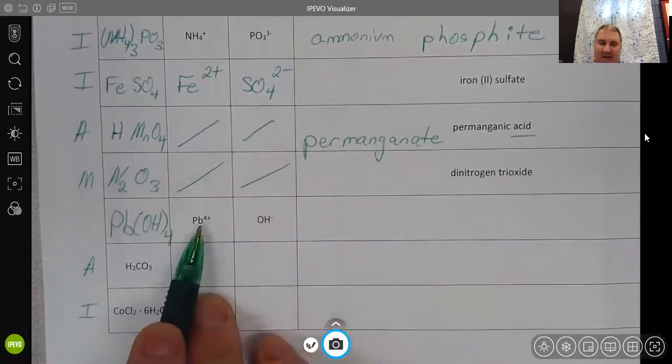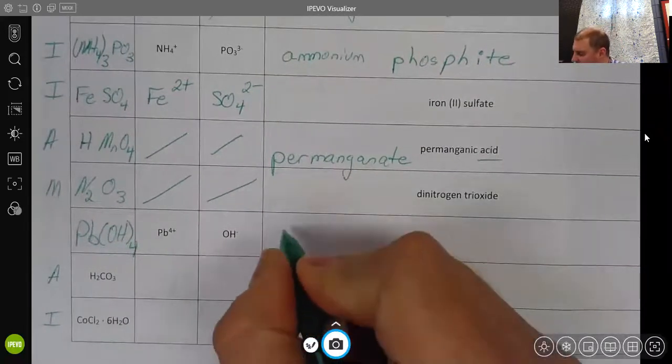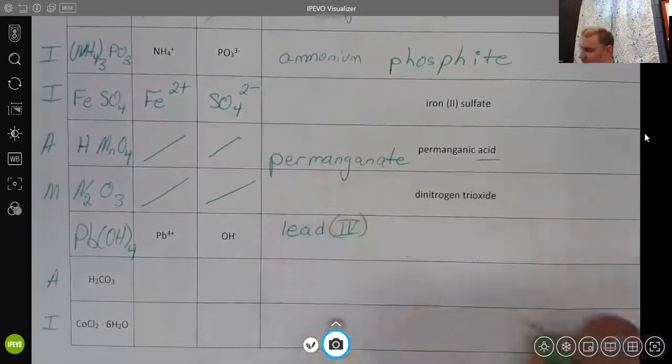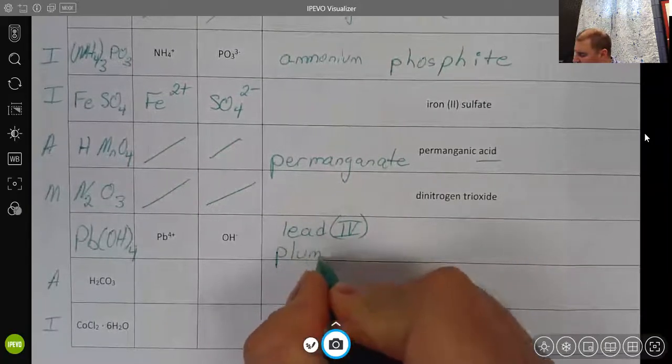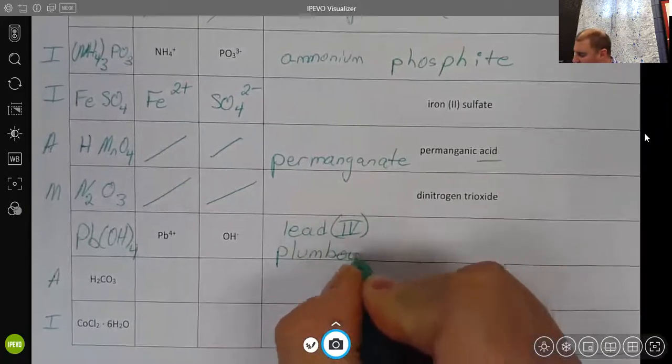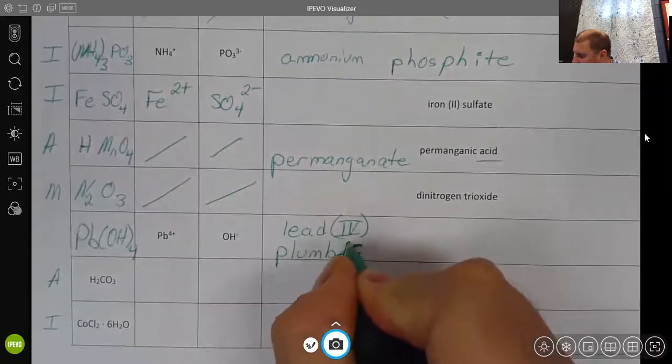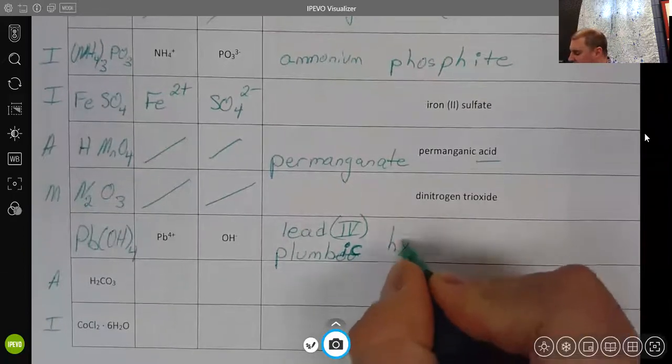We name these ions, because lead can have multiple charges, we want to name it as either lead 4. And you can use parentheses, or you could use the old name, and the old name would make this into plumbic, because 4 is the higher charge, and then the OH is called hydroxide.